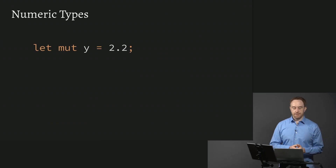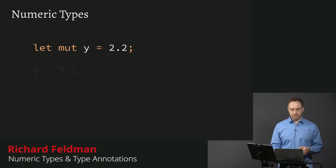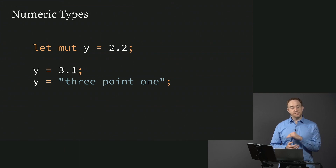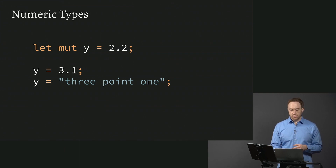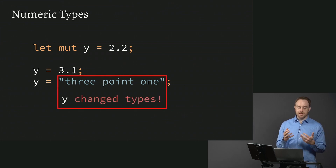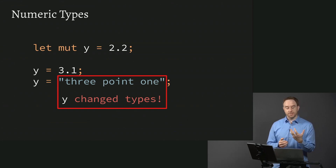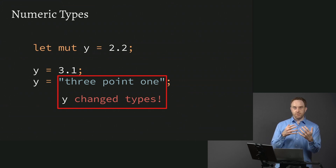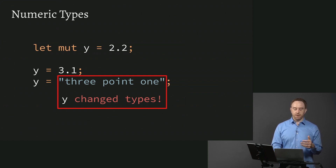Let's talk about numeric types. Here I've said 'let mut y = 2.2' and then later 'y = 3.1.' But if right after that I said 'y = "3.1"' — the string — that would not work. In Rust, although you're allowed to reassign things, once you define a value it gets a particular type associated with it, and you're not allowed to change that at runtime. You can reassign values of the same type, but you can't change to a different type — so changing from a float to a string is not allowed.